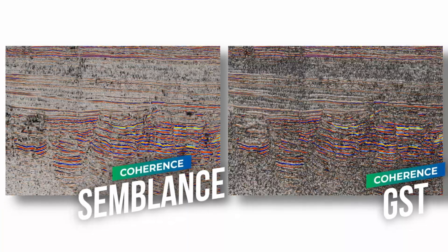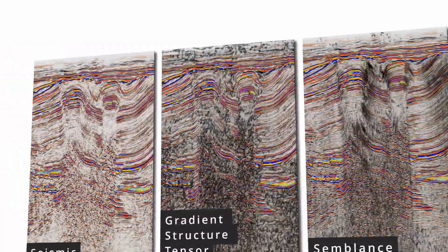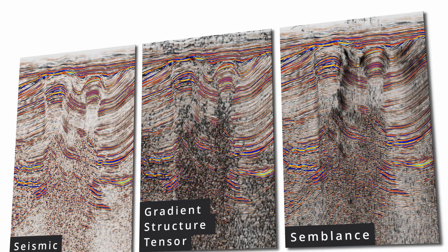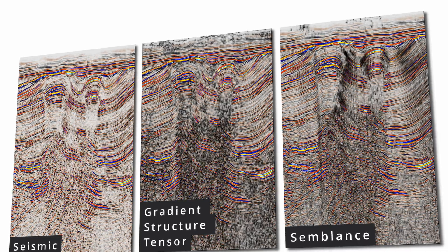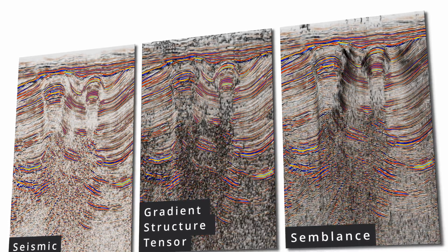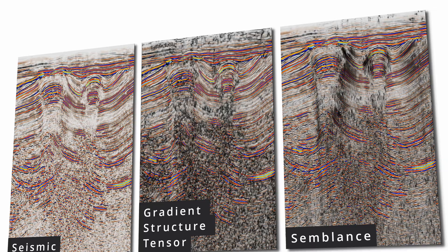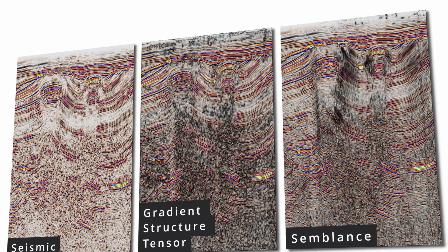Some attributes are based on the observation that faults exhibit lateral reflection continuity or discontinuity, like, for example, semblance, coherence, and variance.